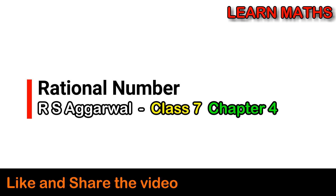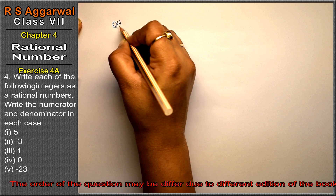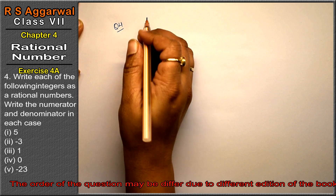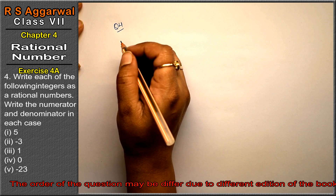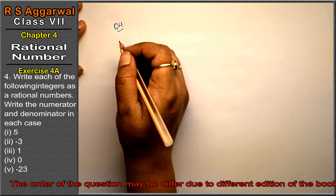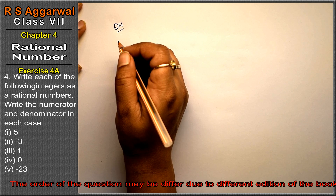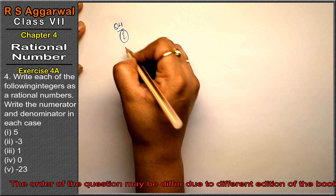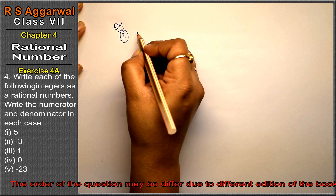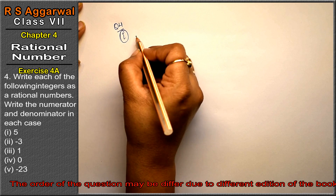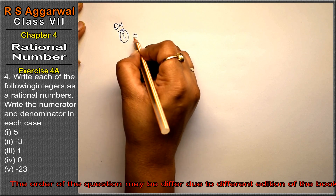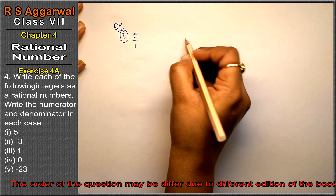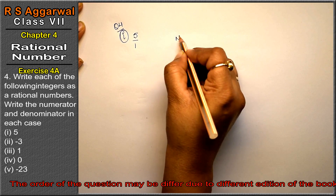Let's do question number 4 of exercise 4a, rational numbers. Question number 4 is: write each of the following integers as a rational number, and write the numerator and denominator in each case. First part: 5 can be written as 5 upon 1, so the numerator is 5.